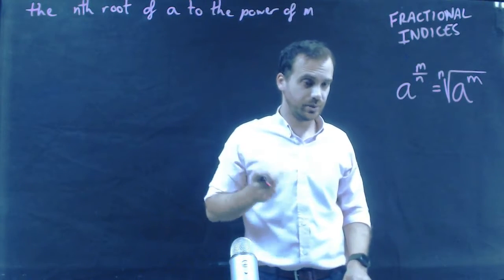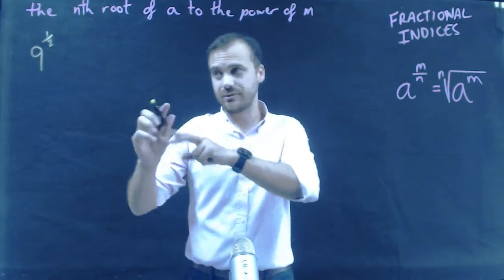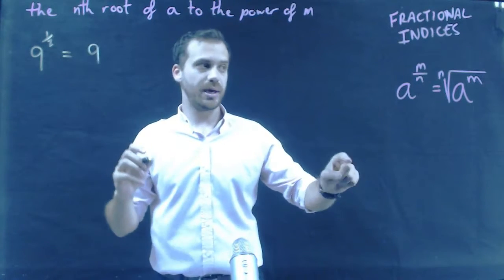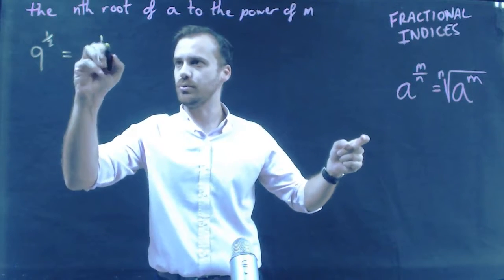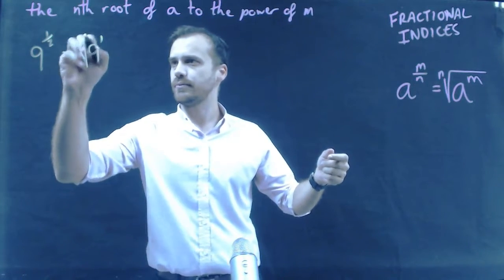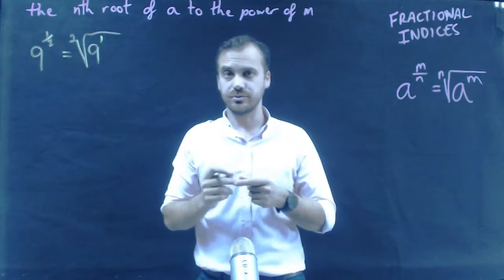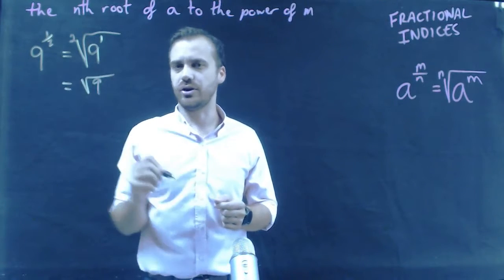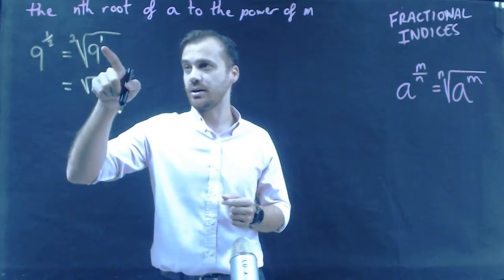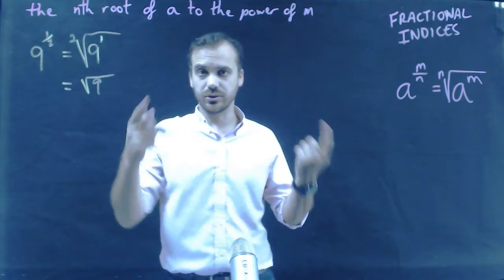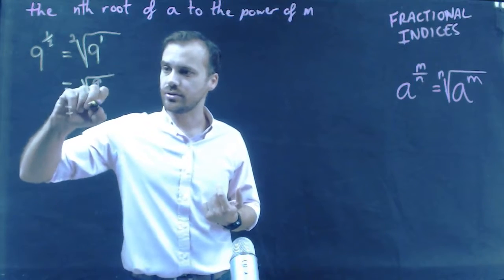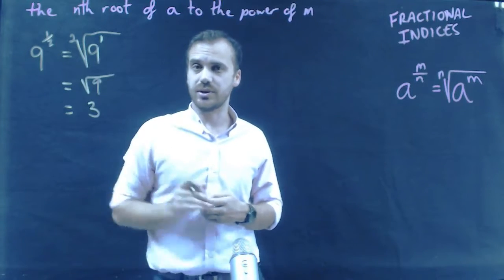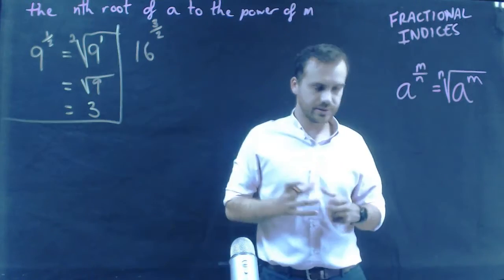Let's take a look at a couple so you can see how they work. Here we have nine to the power of a half. That's going to be the base nine, to the power of whatever's on the top — one — so nine to the power of one, with the second root, which is just the square root. So really, this just says the square root of nine. When it's a square root we don't need to put a two there, and when it's to the power of one we don't have to write that either. The square root of nine is three.